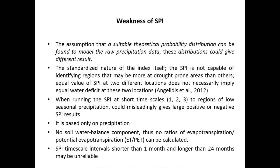The weaknesses of SPI include: first, the assumption that a suitable theoretical probability distribution can be found to model raw precipitation data — different distributions could give different results. Second, the standardized nature of the index means SPI is not capable of identifying regions that are more drought-prone than others; equal SPI values at two different locations do not necessarily imply equal water deficits.